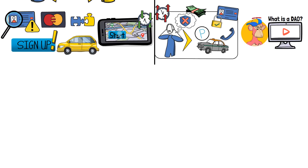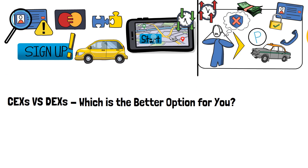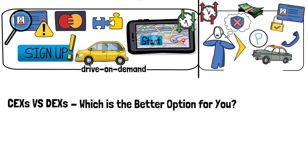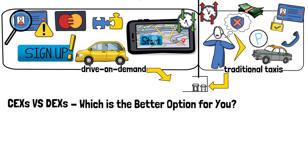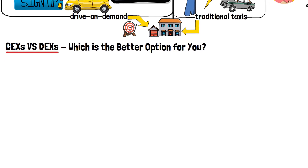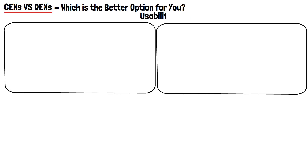Now that you have a pretty good idea of what CEXs and DEXs are, the big question that remains is: which one should you use? If you look at our earlier example with ride-on-demand services and traditional taxis, the differences between the two are admittedly pretty negligible — eventually you'd still end up at your friend's house. With DEXs vs CEXs, though, things aren't quite that simple. One of the first major differences you'll immediately notice between these two types of platforms has to do with usability.